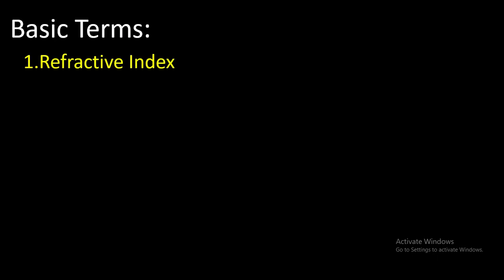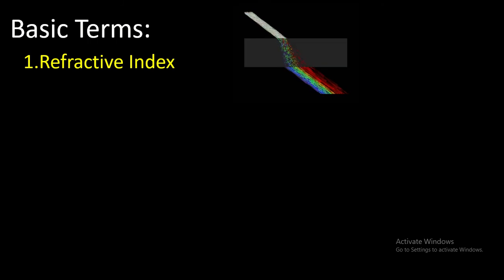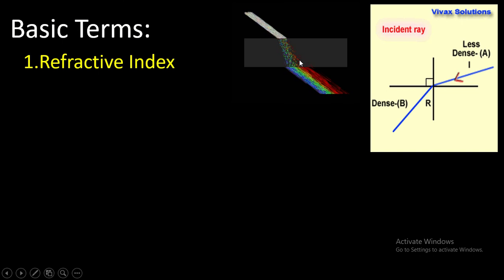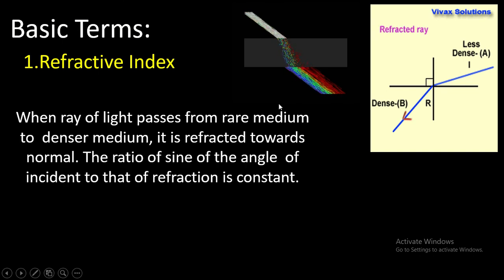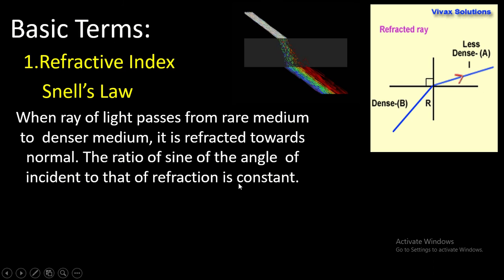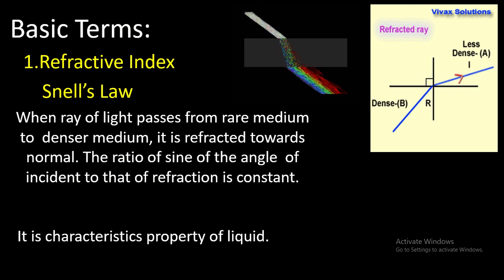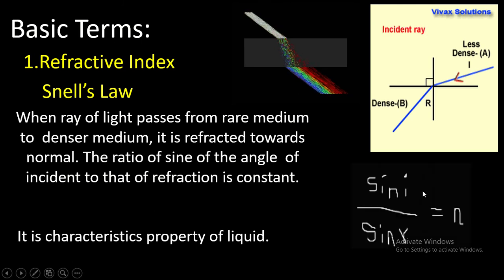The first concept is refractive index. When any light comes from a rare medium to a denser medium, it is refracted towards the normal. The ratio of the sine of the angle of incidence to that of refraction is a constant, called Snell's law. This constant is the refractive index, denoted by η (eta), equal to sin(i)/sin(r). It is a characteristic property of liquids, not solids or gases.